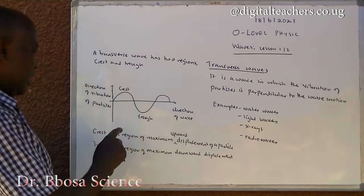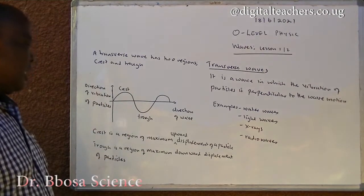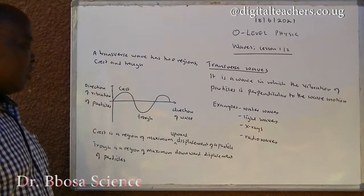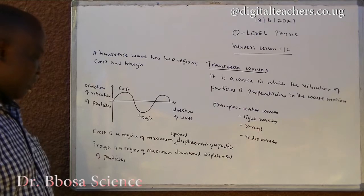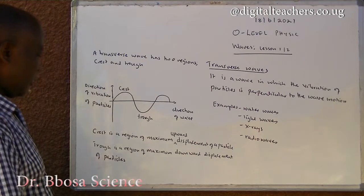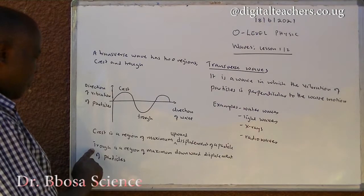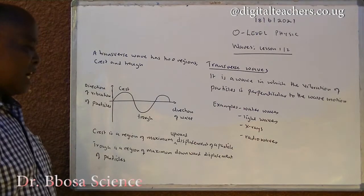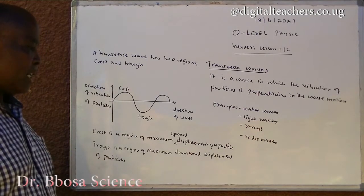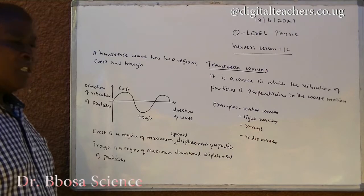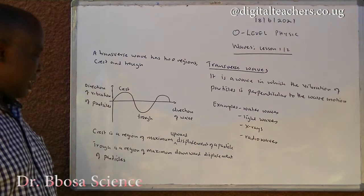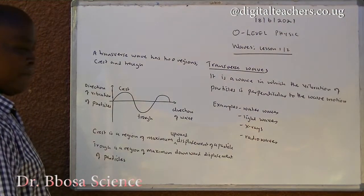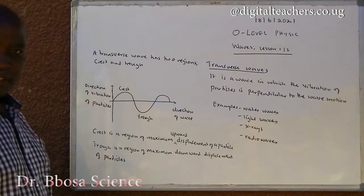Crest is a region of maximum upward displacement of a particle. Trough is a region of maximum downward displacement of particles.